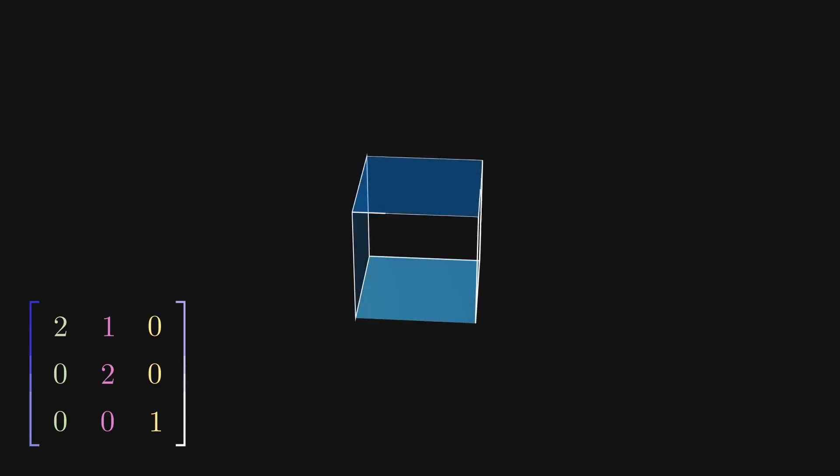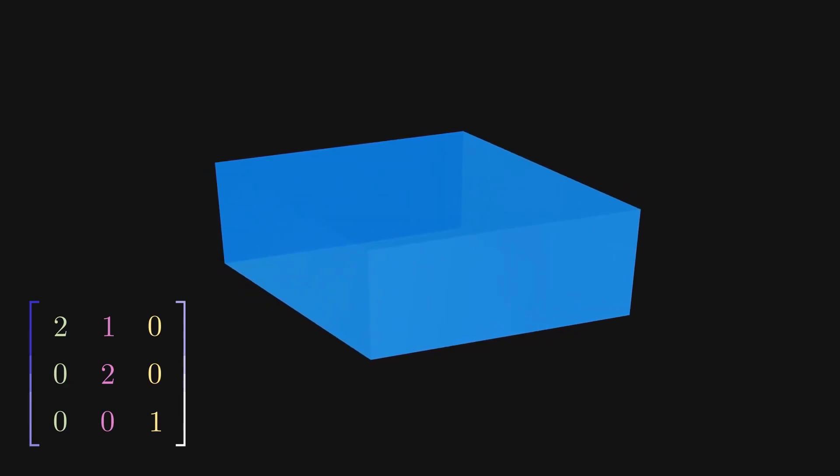But there are matrices where this is just not the case, and the matrix really is undiagonalizable. Take this seemingly innocent example of a transformation that stretches points in the x and y direction, as well as skew them together a bit.